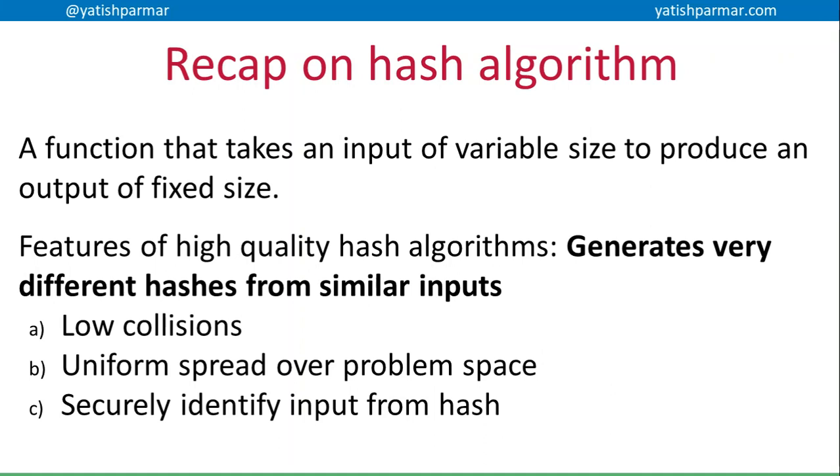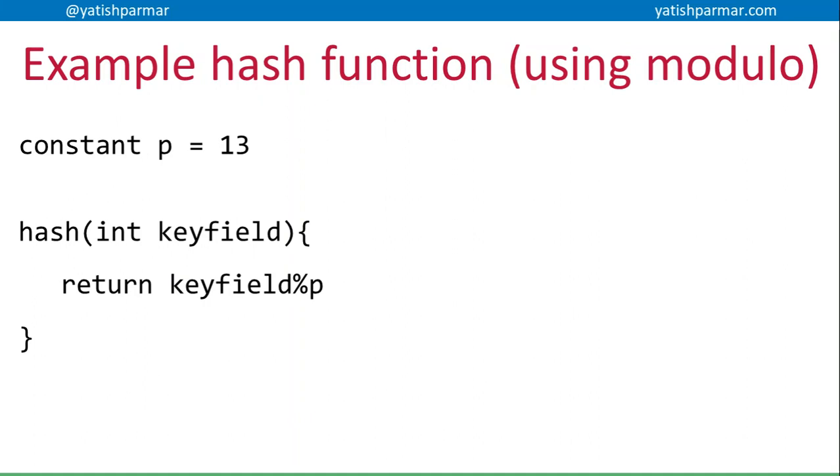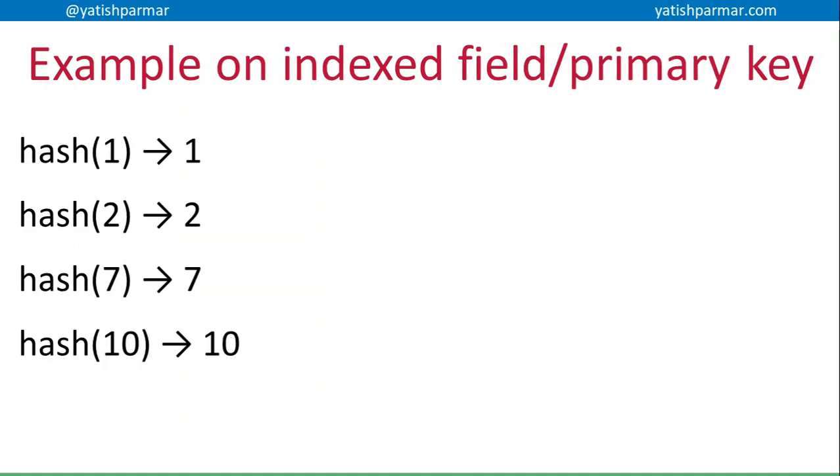That was the features of a good hash algorithm. Now this is an example of a hash function that might use modulo. We're going to pass in some kind of value on a key field, a numeric value, and we're basically working on the modulus. In this case I'm using 13 and I'm going to return whatever value is generated from there. For example, if I hash 1 I'll get a remainder of 1, if I hash 2 a remainder of 2, hash 7 is a remainder of 7, hash 10 is a remainder of 10.